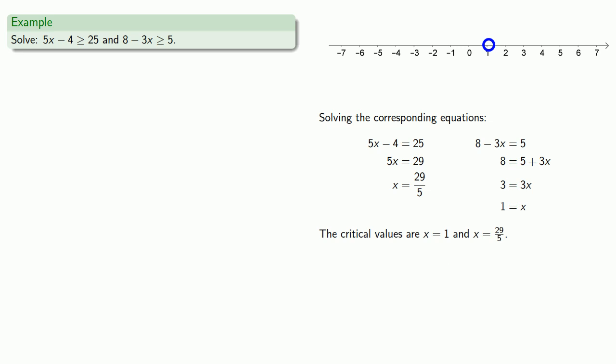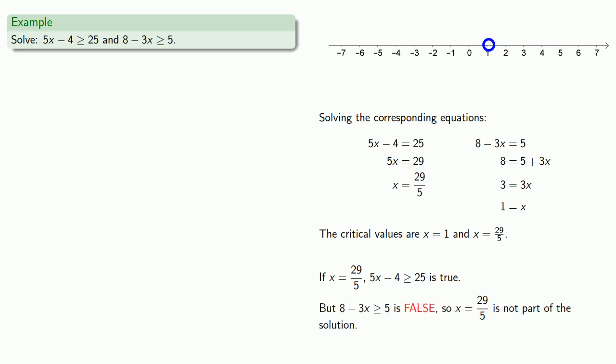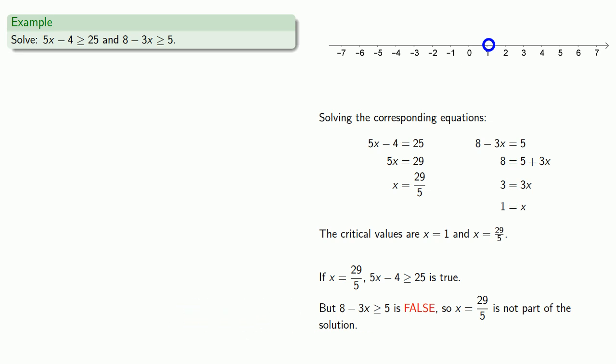If x equals 29 fifths, 5x minus 4 greater than or equal to 25 is true. But 8 minus 3x greater than or equal to 5 is false. So x equals 29 fifths is not part of the solution. We'll put an open circle at x equals 29 fifths.